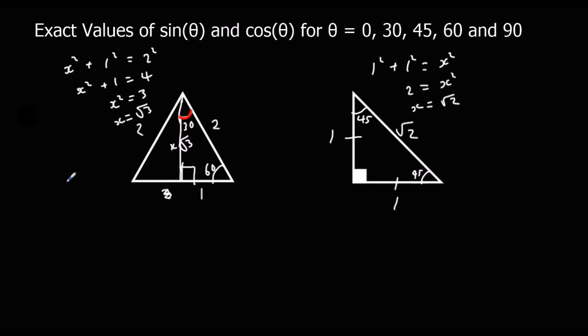We know that sin of an angle is opposite over hypotenuse, and cos of an angle is adjacent over hypotenuse. So sin 30 equals opposite, which is 1, over hypotenuse, which is 2. So sin 30 is half, and cos 30 is adjacent, so root 3 over hypotenuse, which is 2. So there we can work out sin 30 and cos 30.